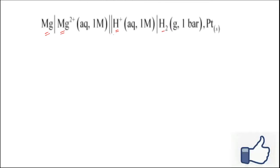This is the right-hand side, this is the left-hand side. This is the anode and this one is cathode. In this part, oxidation takes place, and in this part, reduction takes place.